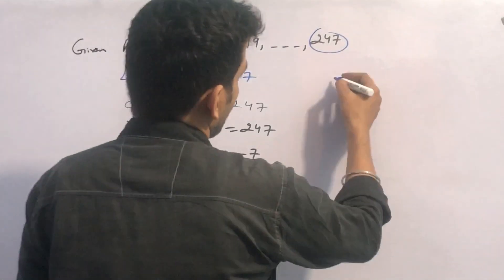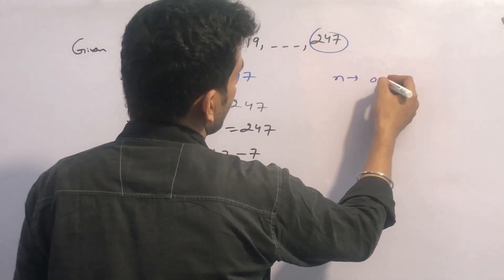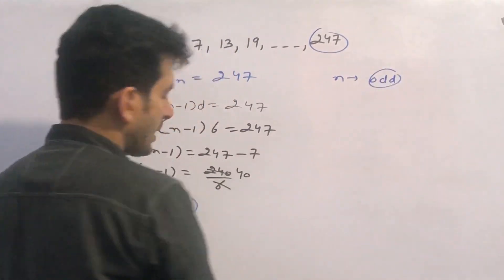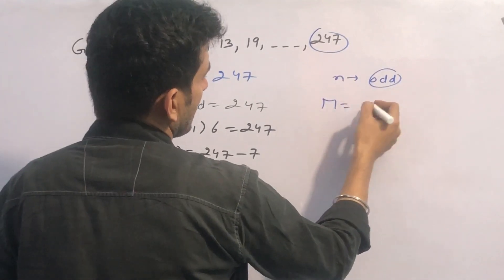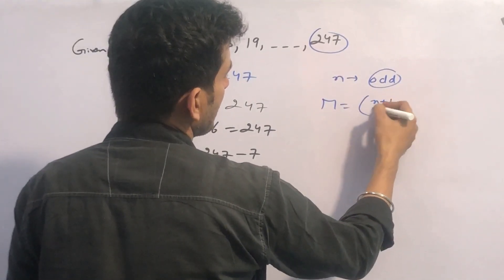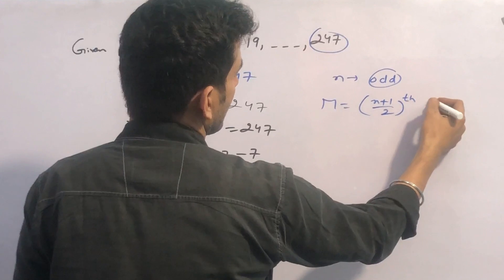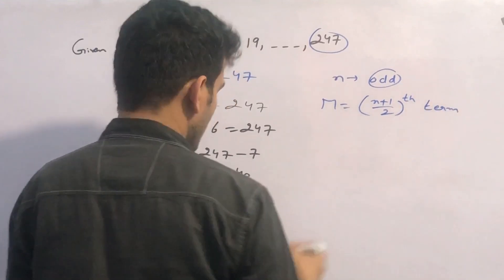Now there are two cases. If N's value is odd, if N's value is odd, like here it is, then the middle term is equal to N plus 1 by 2 th term.